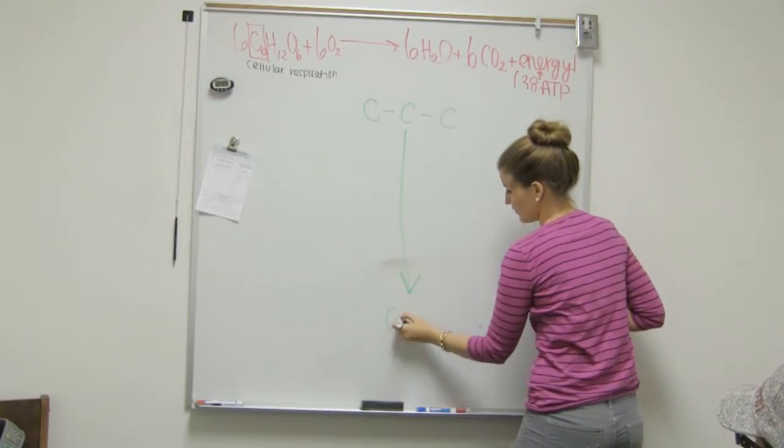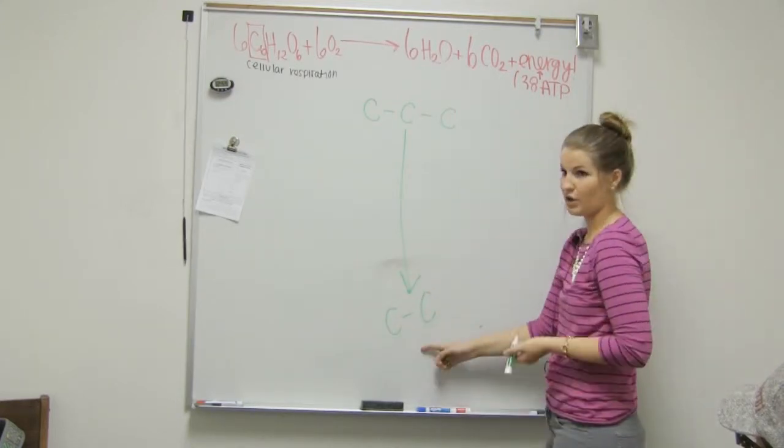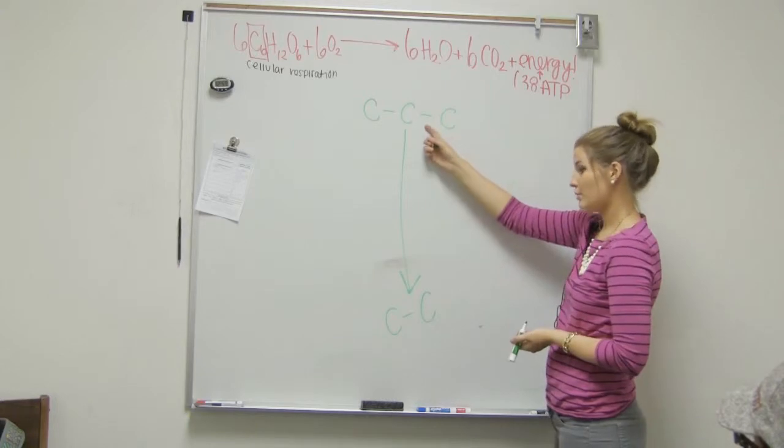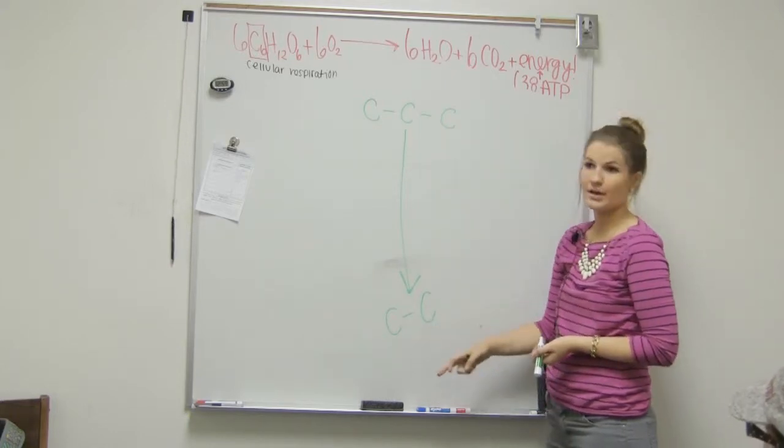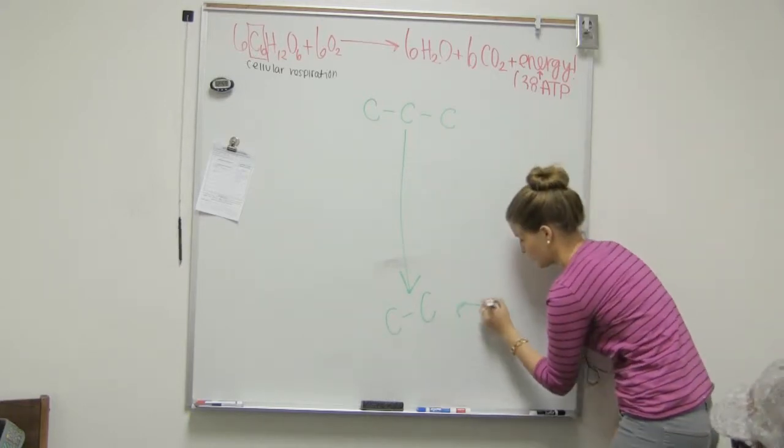So right now we have pyruvate, right? And we want to make it to acetyl-CoA. Pyruvate's a three-carbon molecule, acetyl-CoA is two. Two. So this is acetyl-CoA, and this is pyruvate.